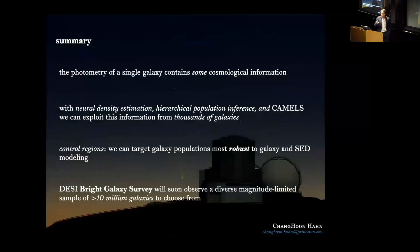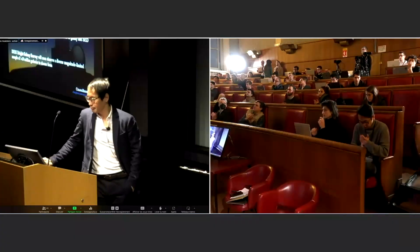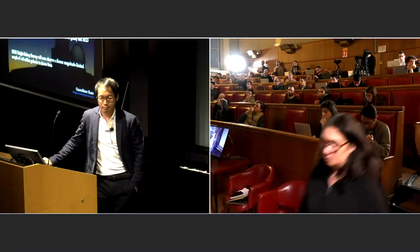Let me end here with the summary which is that the photometry of a single galaxy contains some cosmological information and we can really exploit this by using CAMELS, neural density estimation, and hierarchical population inference by using many many different galaxies. I think one of the advantages of this approach is really this control regions where we can really target the galaxies that we can robustly model. I think with the next generation surveys this will be a really promising approach. All right, thanks.